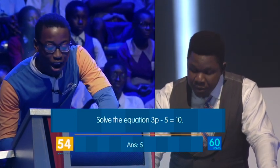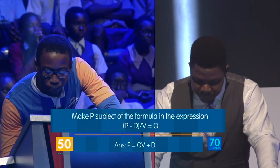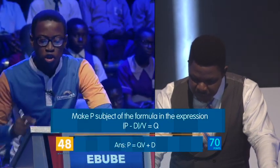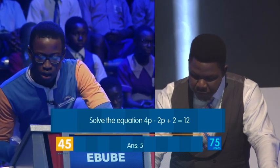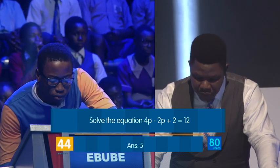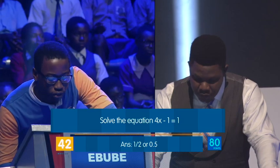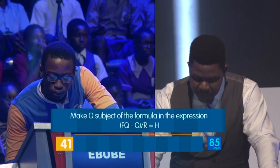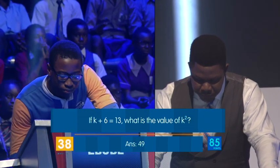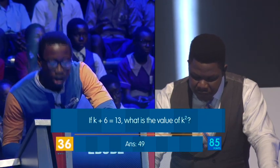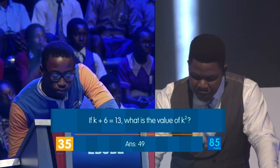Simplify 3 over... Skip. Solve the equation... Five. Correct. Simplify minus 63x squared over... Threex. Correct. Make P the subject of the formula in the expression P minus... QV plus D. Correct. Solve the equation 4P minus 2P plus 2. Five. Correct. Solve the equation 4x minus... Correct. Make Q the subject of the formula in the expression FQ minus...